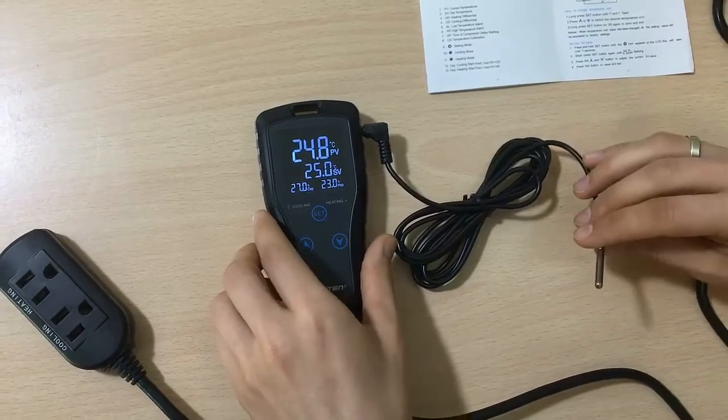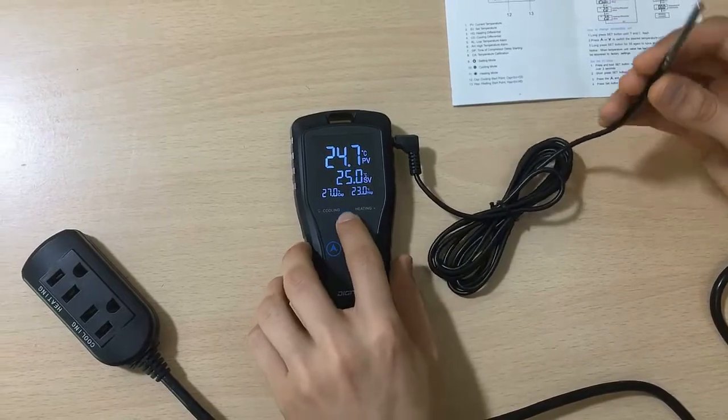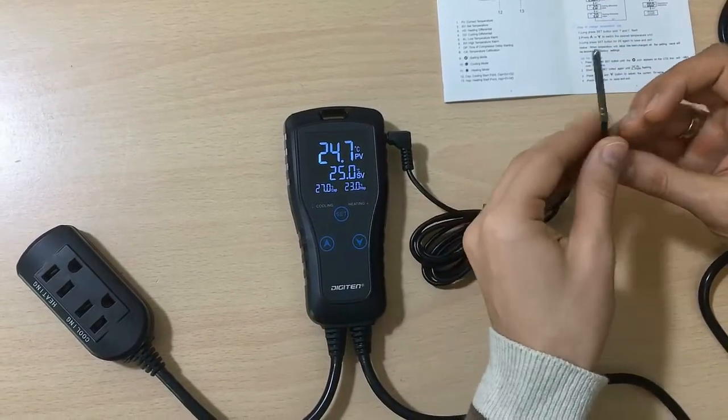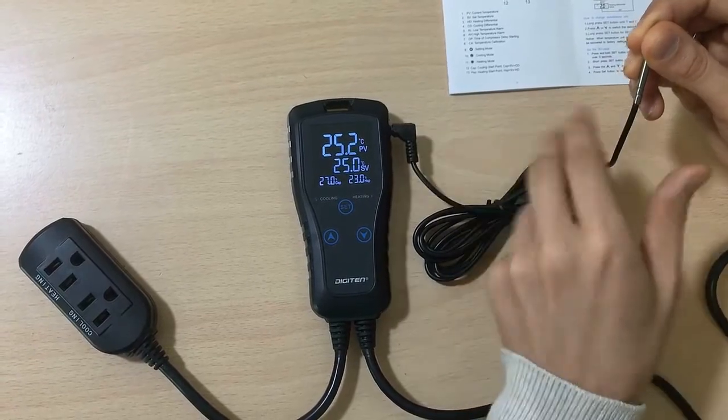Understand what the DTC-102 is showing you and which parts it has. As you can see, it has three main parts. Number one is a sensor that shows the actual temperature. If we touch it, the temperature is changing.